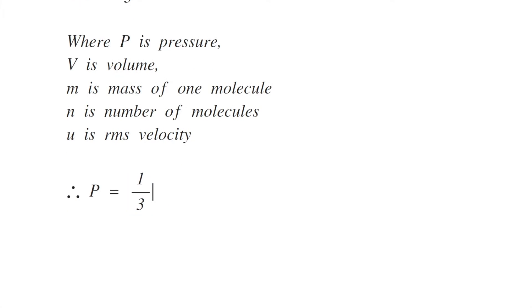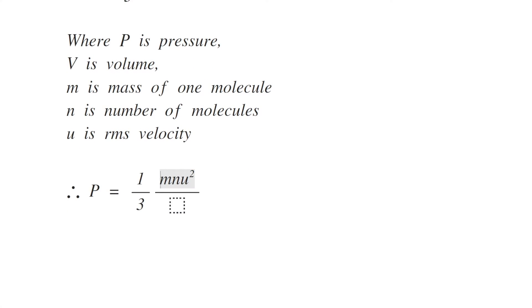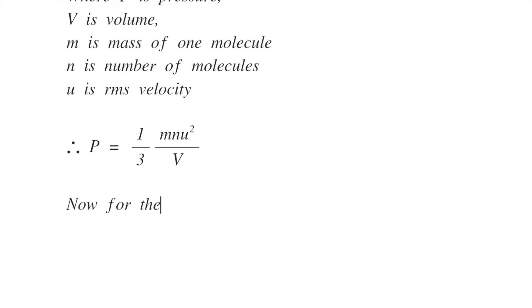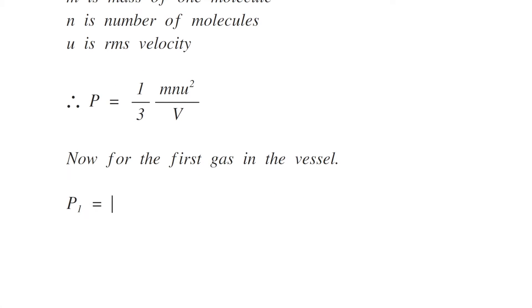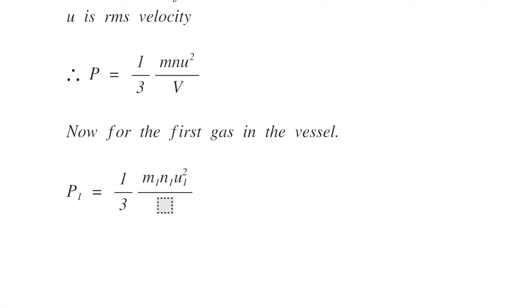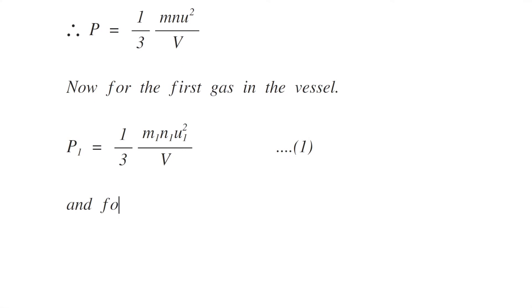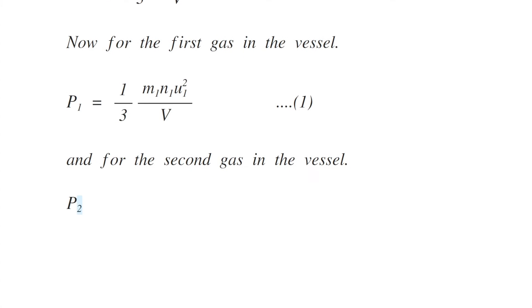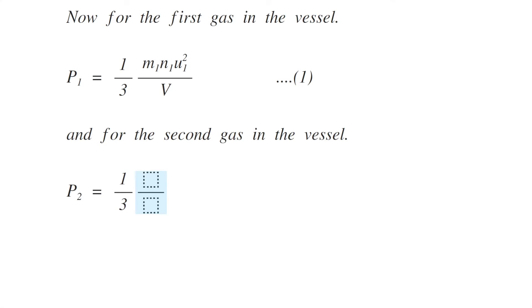Then P is equal to 1/3 mNu squared divided by V. Now for the first gas in the vessel, we can say P1 is equal to 1/3 m1 n1 u1 squared divided by V. And for the second gas in the vessel, we can say P2 is equal to 1/3 m2 n2 u2 squared divided by V.